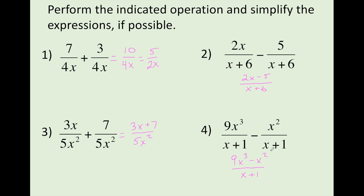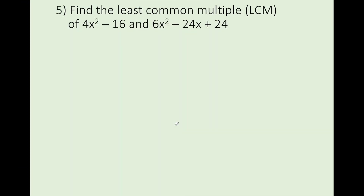Now the difficulty is going to be when the denominators are not the same. In order to take care of when the denominators are not the same, the first thing we have to do is be able to find the least common multiple between terms. We're going to factor this term out and factor this term out. Hit pause, then come back and see what the factors are.